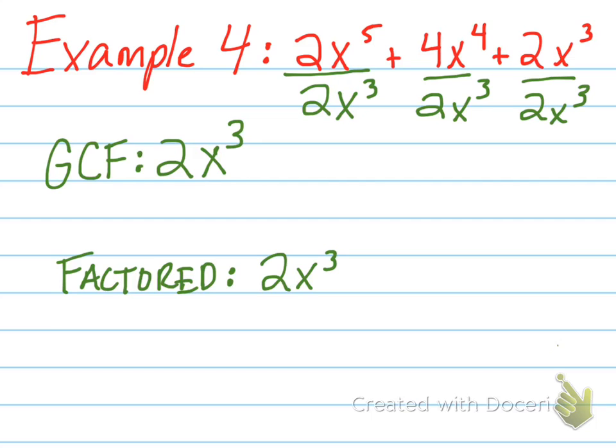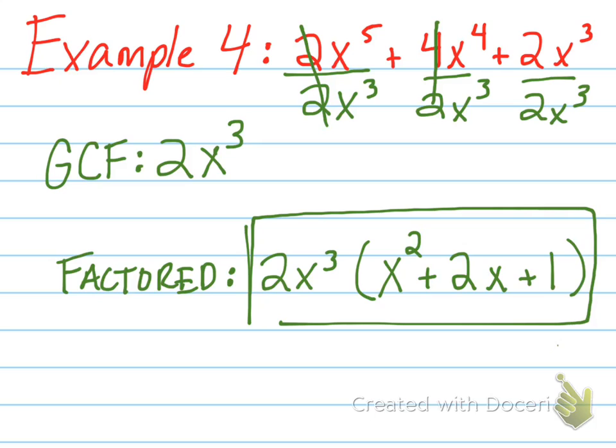When I divide 2 by 2, I get 1. I have 5 x's. I'm taking away 3, so I'm left with x squared. In the second term, 4 divided by 2 is 2. I have 4 x's. I'm taking away 3, so I'm left with 1. 2 divided by 2 is 1. I have 3 x's, taking away 3, so I'm only left with 1. So the final factored answer is 2x cubed times parentheses x squared plus 2x plus 1.